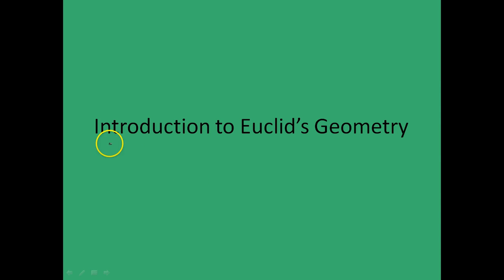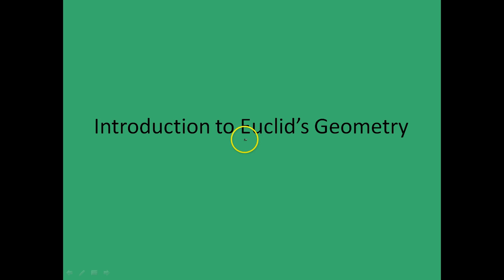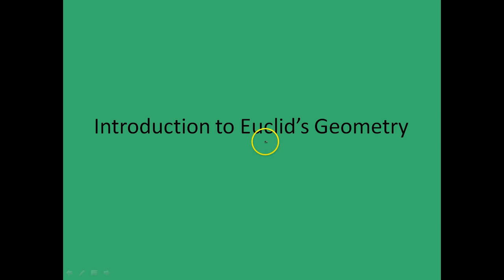This is a lecture on Introduction to Euclid's Geometry. Euclid was a famous mathematician to whom we pretty much owe our knowledge of basic geometry. In 300 BC he put together a treatise called Elements which had various books which influenced the knowledge of geometry of generations to come.